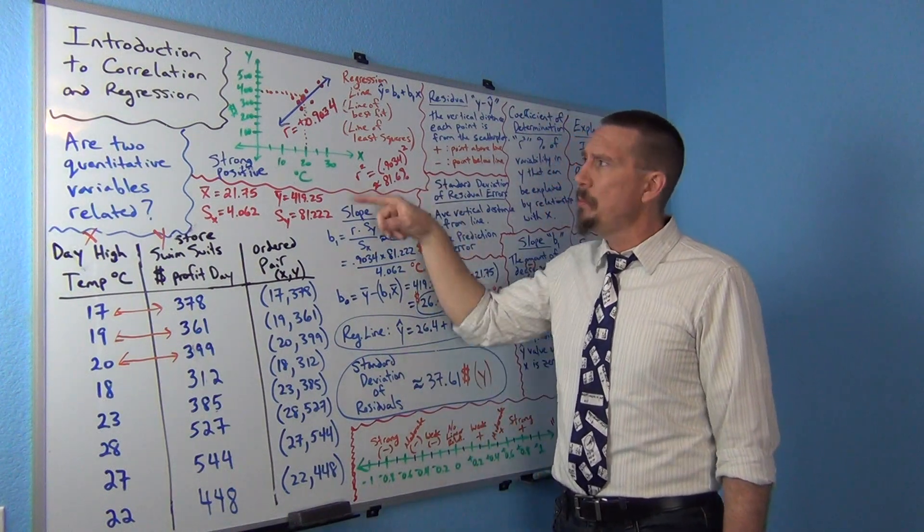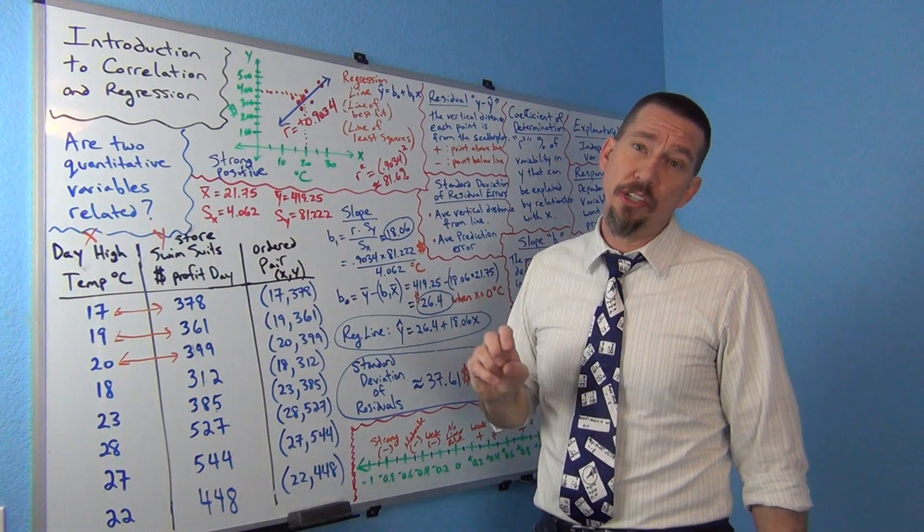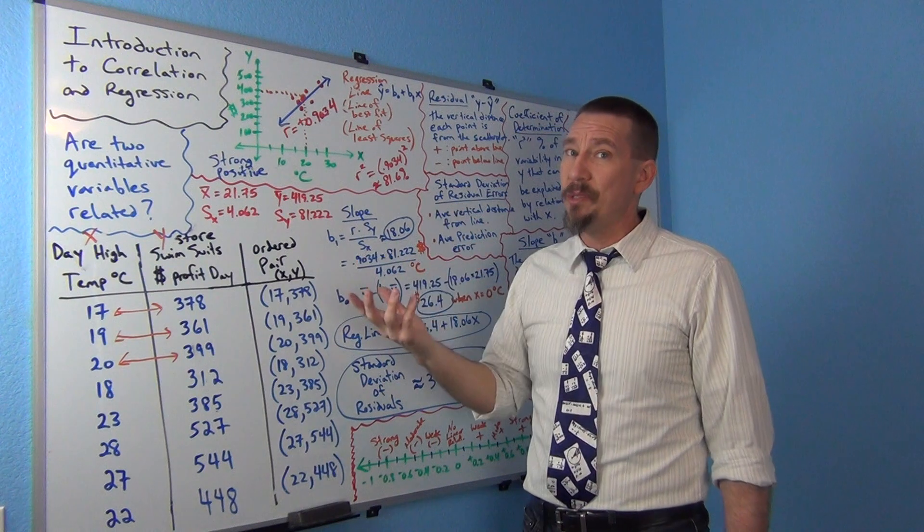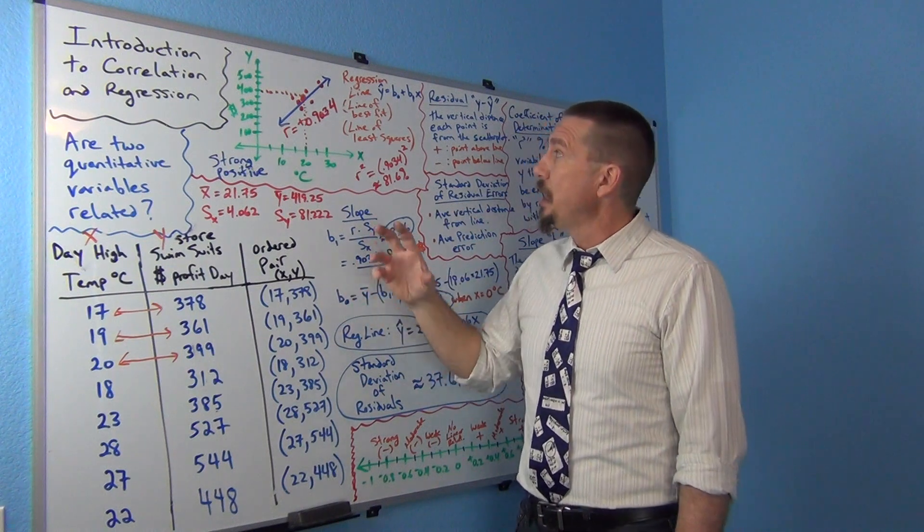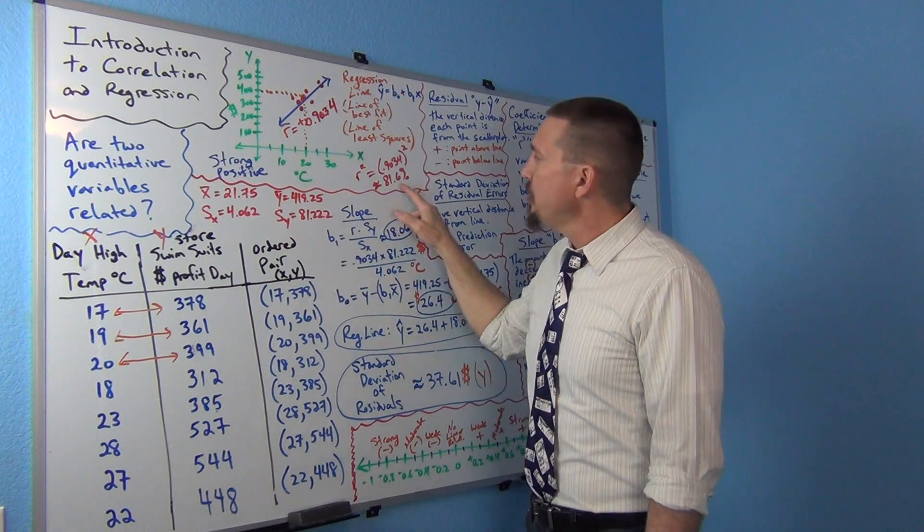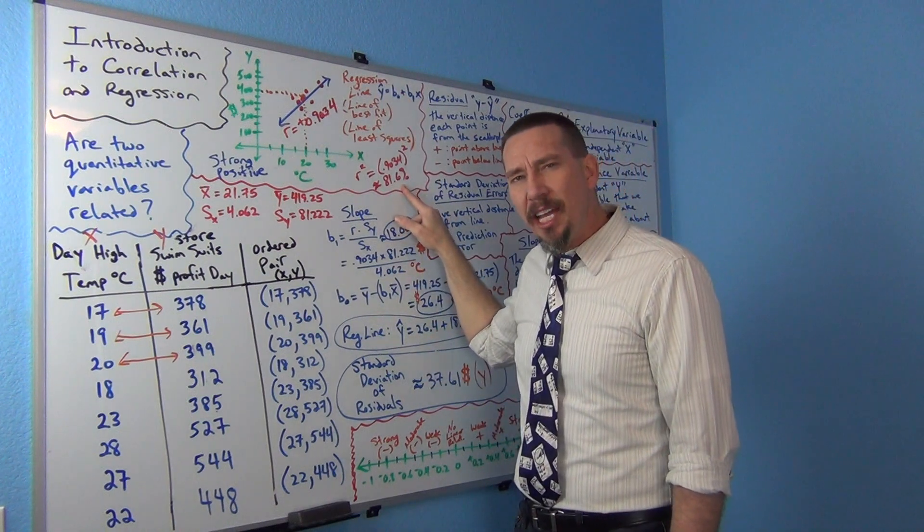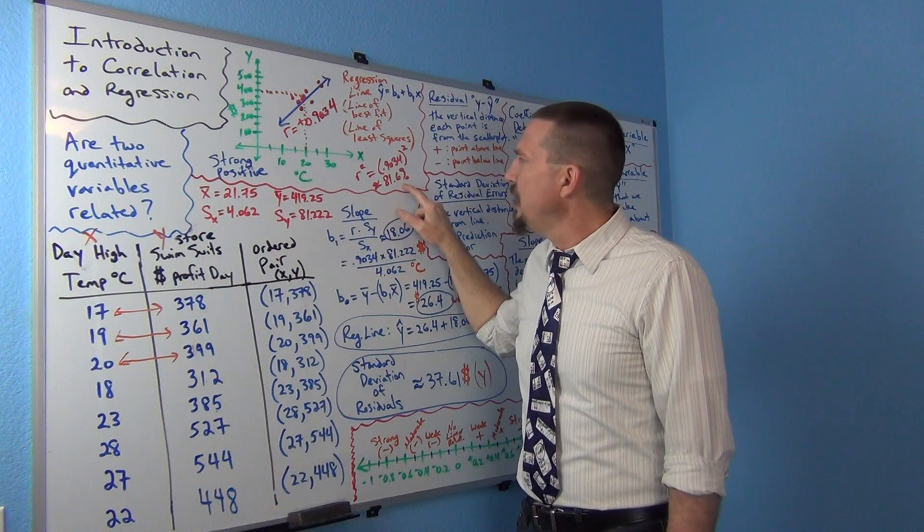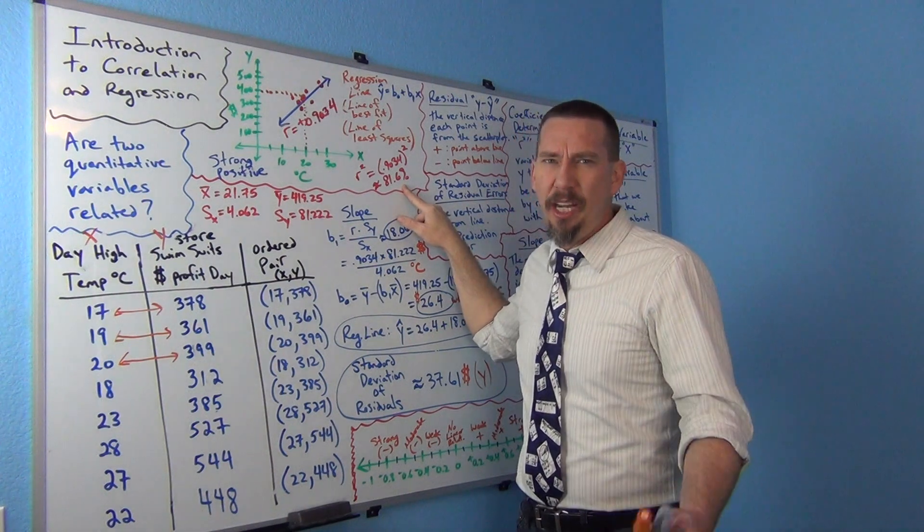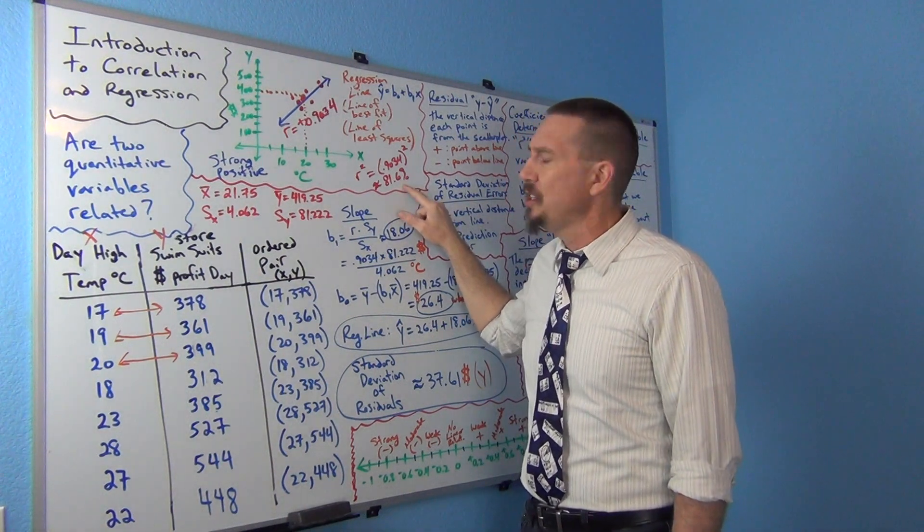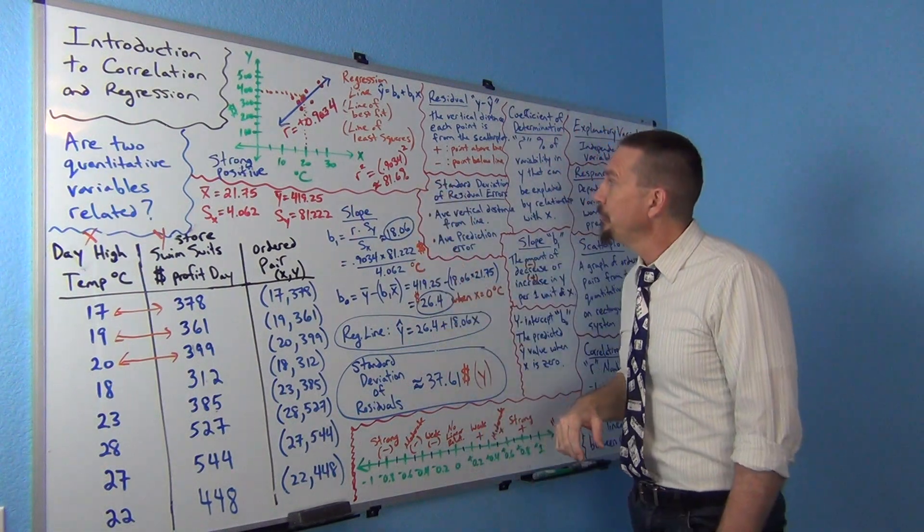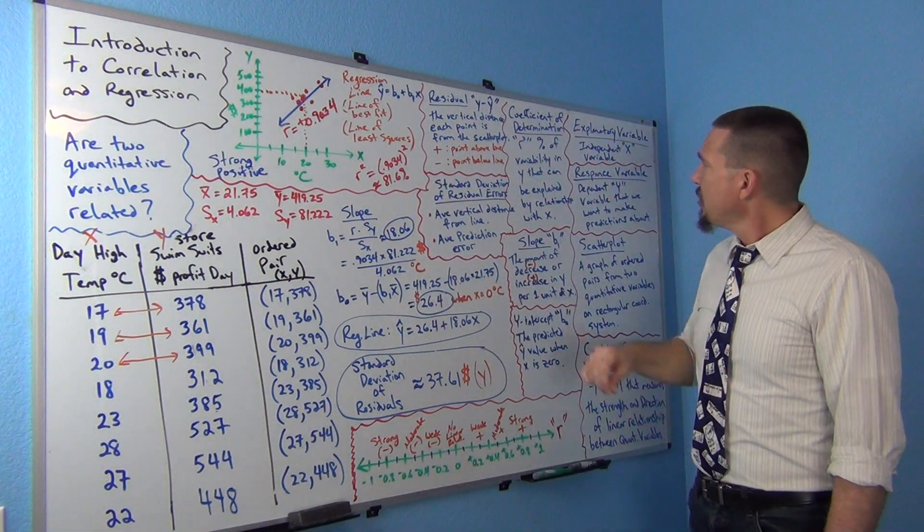But it's also a little easier number to judge how strong a relationship you have. Now you do lose the negative positive because when you square something, it's always positive. So you won't know. That's why it's always good to look at a scatter plot. You can kind of see if the line is going up or down. But it's a percentage. And the higher that percentage gets, the stronger the relationship. So that's also a good number for people that aren't, you know, maybe haven't had as much training with reading R. R squared is a little easier number. The higher that percentage gets, the stronger the relationship. So that's R squared.